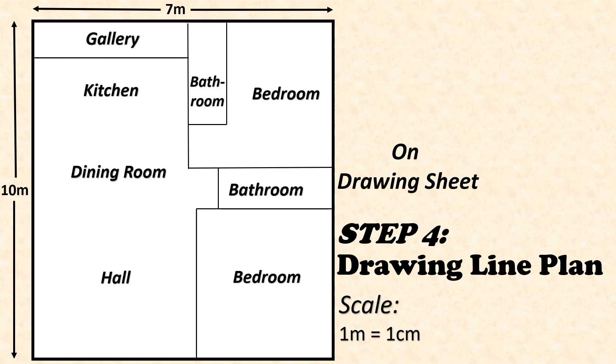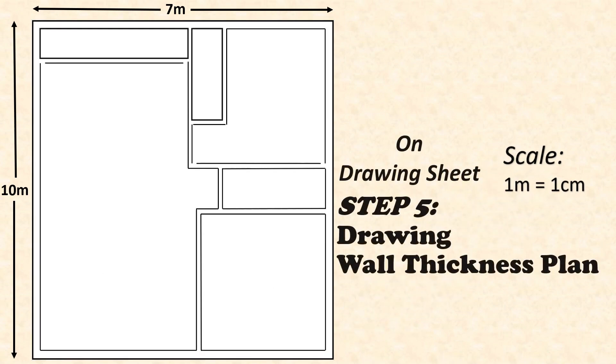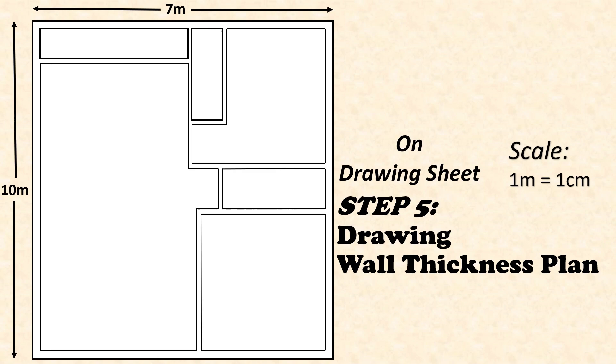Then our next step is drawing the wall thickness plan. In the line plan we have used single lines. Now here we need to define our wall thickness. The thing which is very significant is that there will be different wall thickness for internal and external walls. The walls on the exterior boundary are called exterior walls, and those making inside partitions are termed as interior walls.